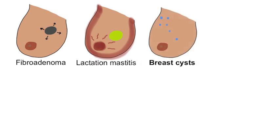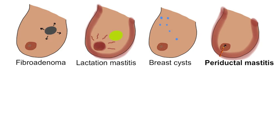Breast cysts may occur in patients during their reproductive years. They are symmetrical, discrete and cyclical, and if they are tender they can be aspirated. Periductal mastitis is more common in smokers and those with nipple piercings. Treat a painful breast with antibiotics. Complications include abscess and mammary fistula.